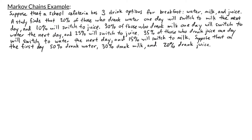In this example, we're given that a school cafeteria has three drink options for breakfast: water, milk, and juice. As we read through this example, I'm going to draw a diagram to illustrate how the students are changing their drink selections. I have three drink categories: water, milk, and juice.